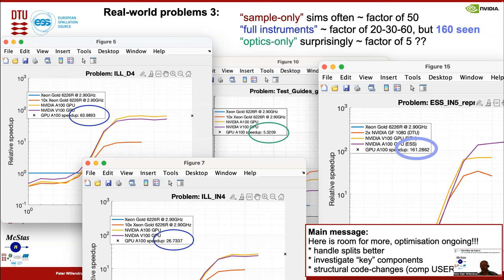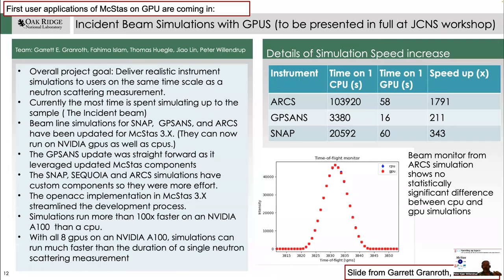Surprisingly, optics-only simulations — things that contain more or less just a guide element — are only about a factor of five faster. The message is that there is room for much more optimization. We will look at how to handle splits better on the GPU and investigate key components like the neutron guides. So what you are looking at here will only get better in the long run.